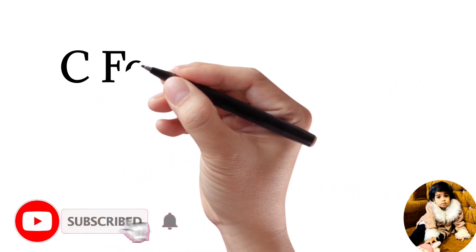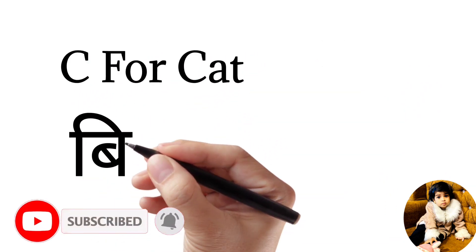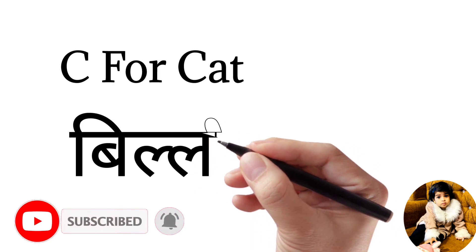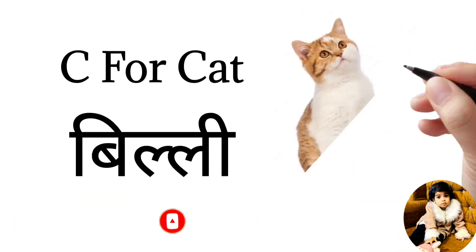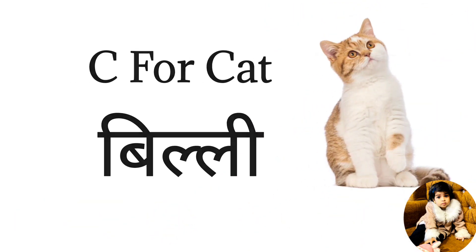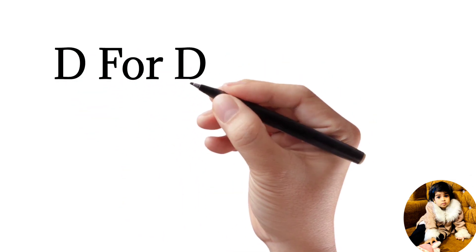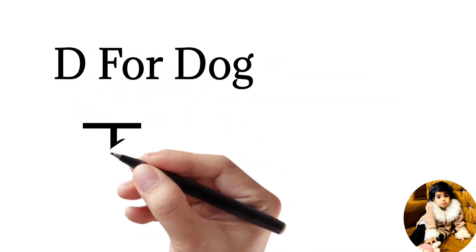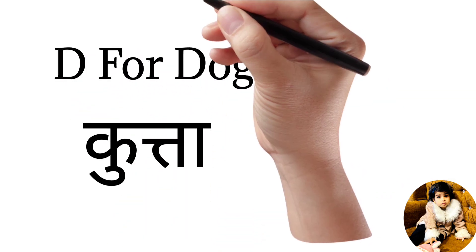C for cat, cat means billy. D for dog, dog means kutta.